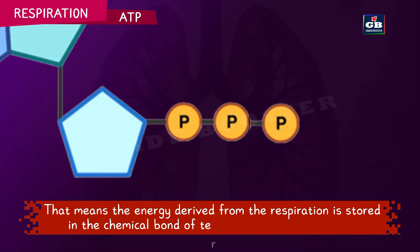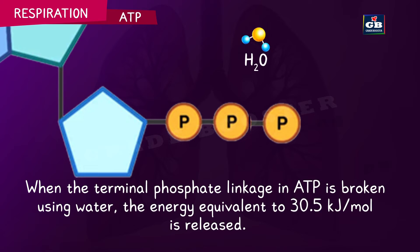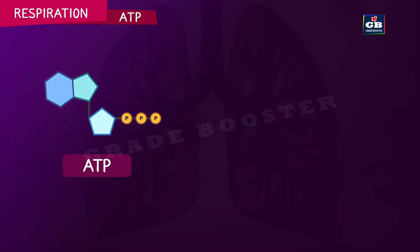The energy derived from the respiration is stored in the chemical bond of the terminal phosphate of ATP. When the terminal phosphate linkage in ATP is broken using water, the energy equivalent to 30.5 kJ per mole is released. This ATP molecule serves as the primary source of energy for various cellular activities.